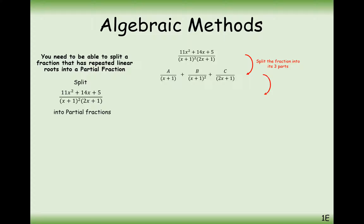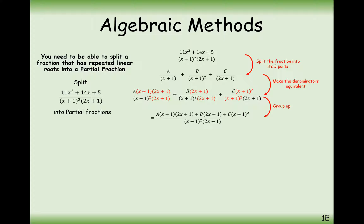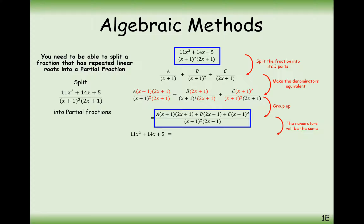We combine these fractions together, group them up, and then compare numerators. So we're going to get 11x² plus 14x plus 5 equal to A(x+1)(2x+1) plus B(2x+1) plus C(x+1)².